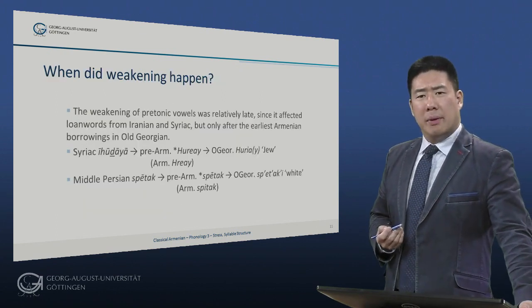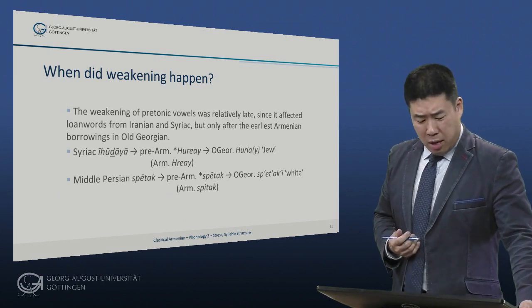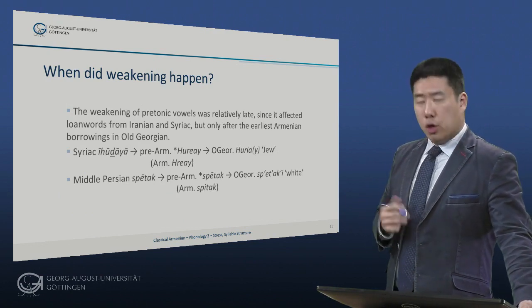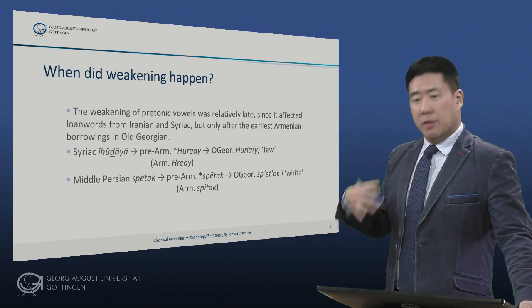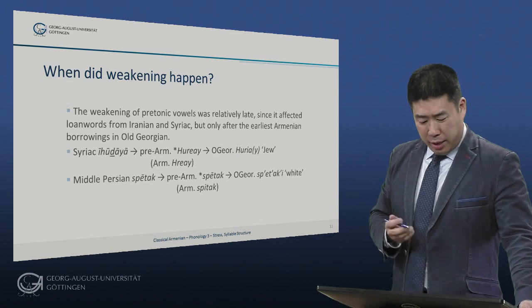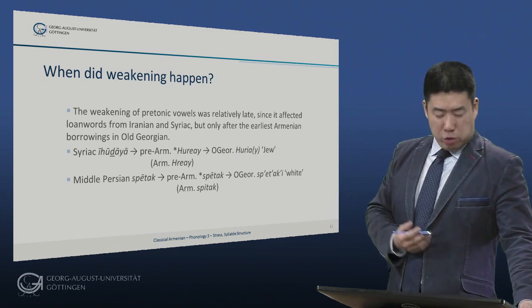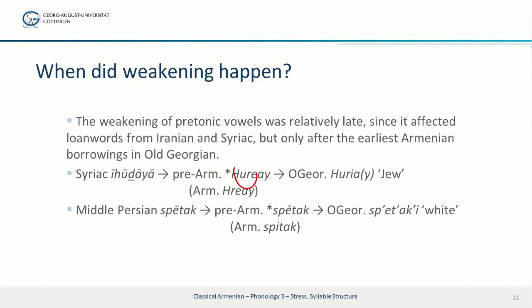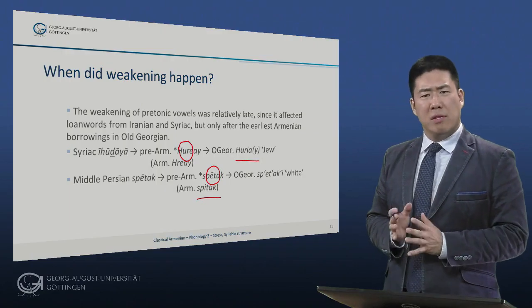When did this vowel weakening happen? It seems it was relatively late, since it affected loan words from Iranian and Syriac, but only after the earliest Armenian borrowings into Old Georgian. For example, the word for Jew, originally from Syriac ihudaya, gives pre-Armenian puryai — still with the vowel u — which was borrowed into Old Georgian as hurya, where weakening never happened. Similarly, the word for white: Middle Persian spetak was borrowed as spetak, with Old Georgian spetaki, and Armenian spetak showing the later weakening. So this was a relatively late change.